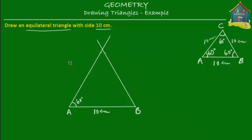There you go. This point where the two lines meet, where the two lines cross is your C. So this angle, angle B is also 60 degrees.